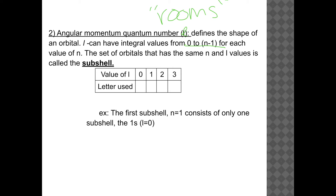Rather than numbering the rooms, we use letters. When L equals 0, the subshell is S. When L equals 1, it's a P subshell. L equals 2 is a D subshell. L equals 3 is an F subshell. For example, when n equals 1, the only possible value for L is 0, so the first floor has just one room: the 1S subshell.